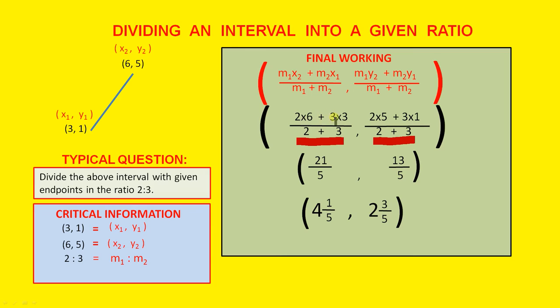If we simplify the above line, twice 6 are 12, 3 threes are 9, 12 plus 9 is 21. So that's the numerator, 21. Over here, 2 fives are 10 and 3 ones are 3, 10 plus 3 is 13. There's your 13 for that numerator. The denominator is 2 plus 3 in each case, so the denominator is 5. So the point is 21 over 5, 13 over 5. So if we transform that to a mixed number, the point which divides this interval in the ratio 2 is to 3 is 4 and 1 fifth, 2 and 3 fifths.